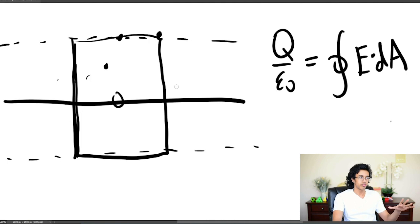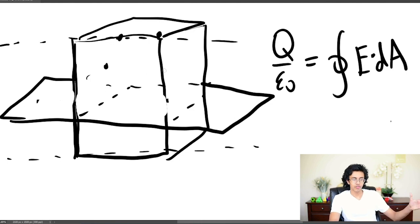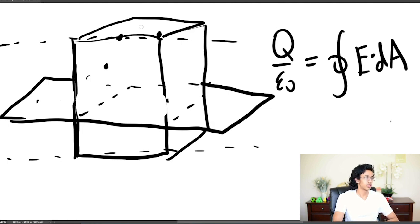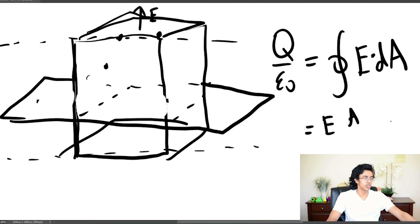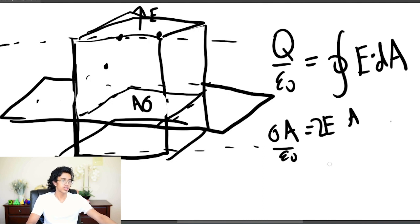Now we apply Gauss's Law. In 3D, the infinite plane is our charge distribution and our closed surface is a pill-box. Every point on the top face has the same electric field E, and the side faces contribute nothing since E is not perpendicular there. So the total flux is E times A from the top plus E times A from the bottom, giving 2EA. This equals the enclosed charge over epsilon — which is just A times the surface charge density sigma over epsilon. Solving, E equals sigma over 2 epsilon-naught.